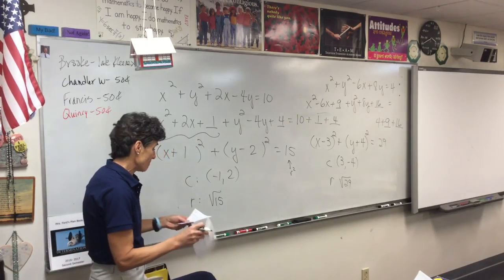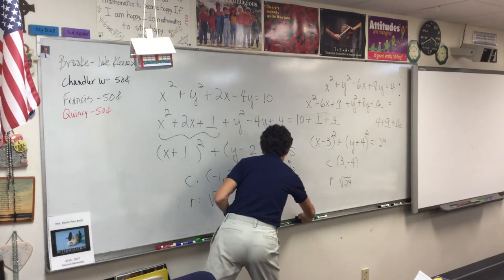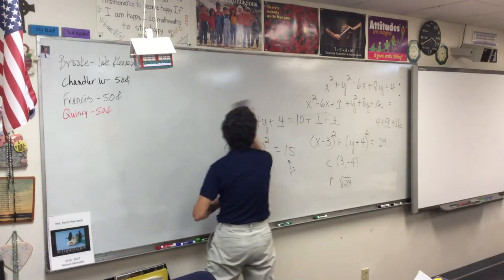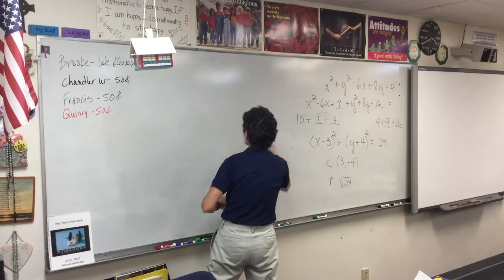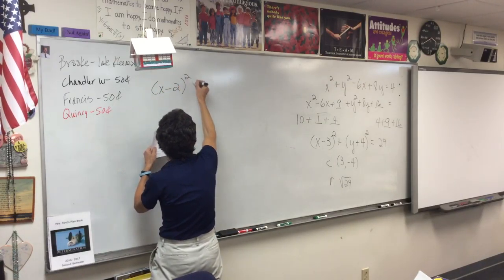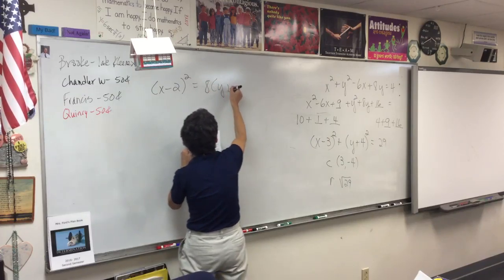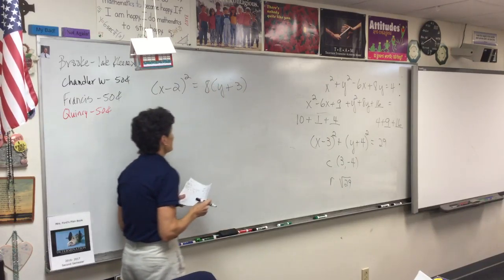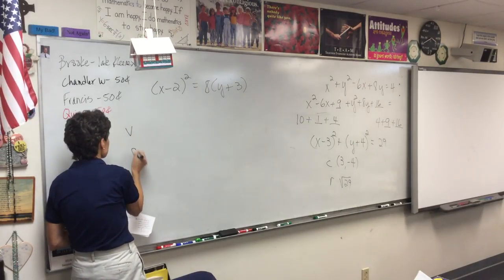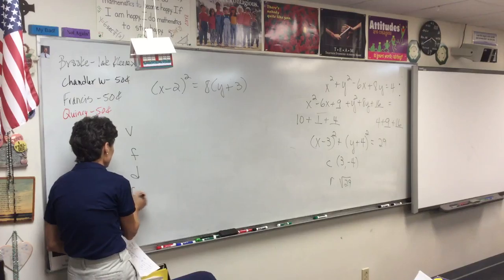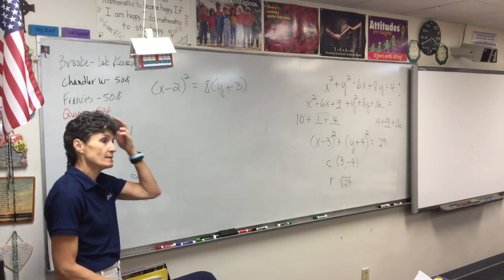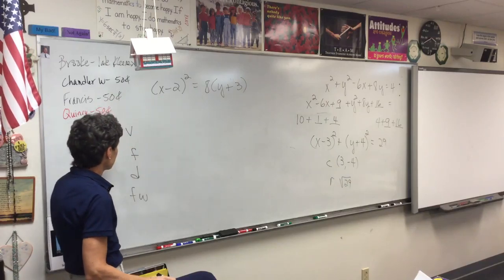Now let's go back to Quiz A. The other problem was a parabola. Here's our parabola for Quiz A. If you don't have Quiz A, write this problem down and work through it with us. We need the vertex, the focus, the directrix, and the focal width. With a circle it's center and radius; with this one, it's all of that.